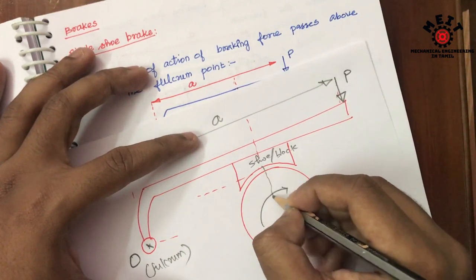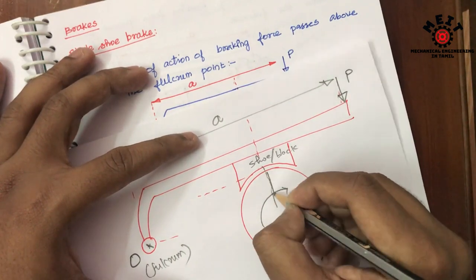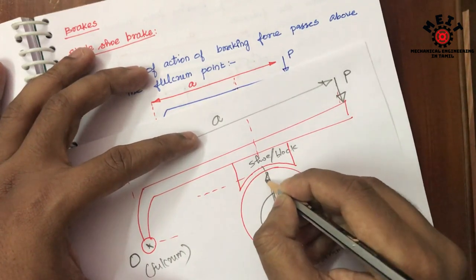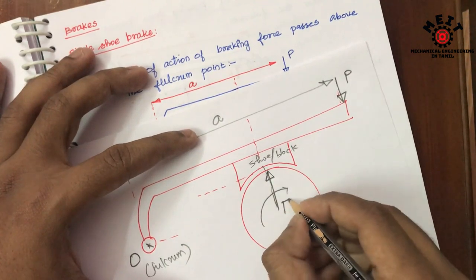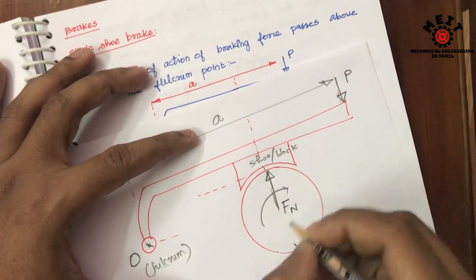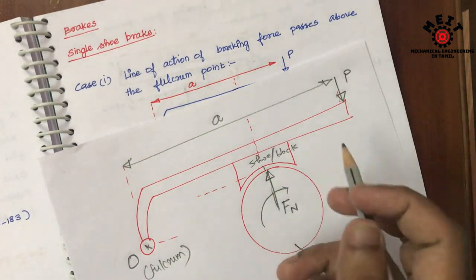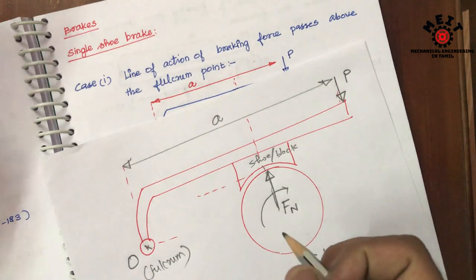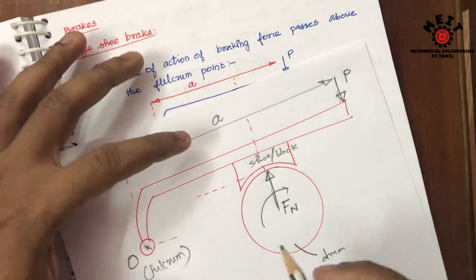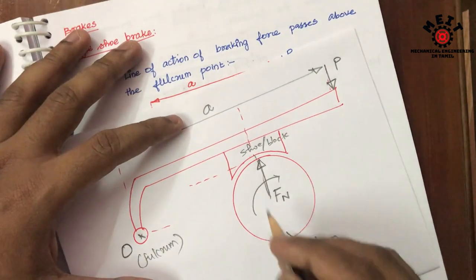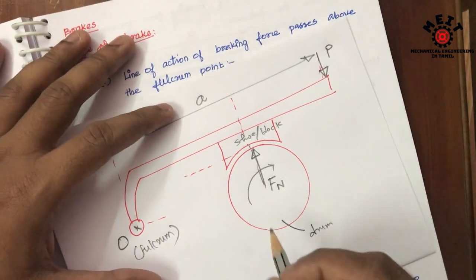This is the center point. If the force is applied, what is the contact force — what is the upward force? That is F_N. P is the downward applied force, and F_N is the normal reaction.